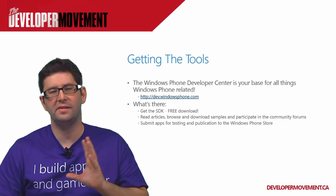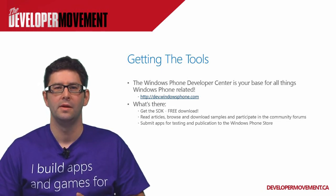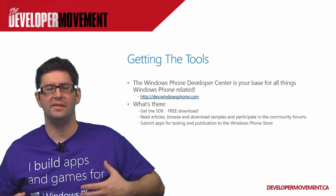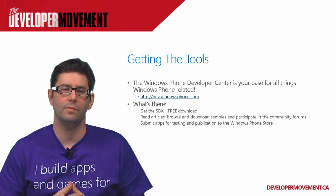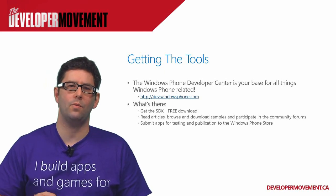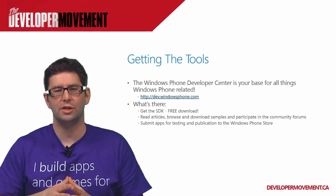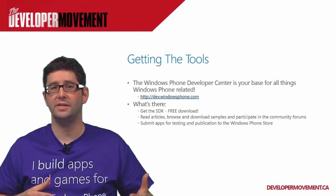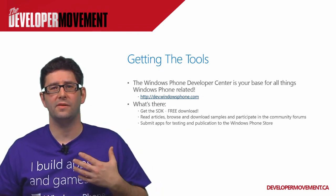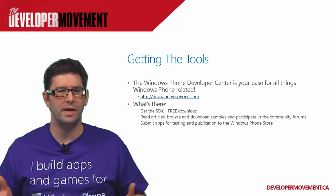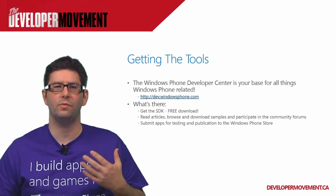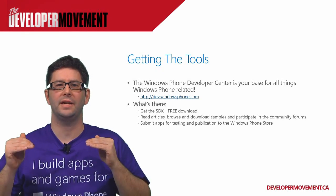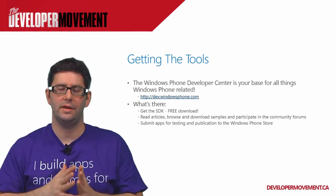You also have the ability to submit applications from the developer center. The model is very similar to the iPhone model and Google Play from a store perspective. Every application or game you get on Windows Phone, with a few exceptions, comes through the Windows Phone Store. The reason is we can control quality and content — both from a content standpoint as well as a technical one. We want to make sure there's no malicious code, and we set a minimum quality bar before we certify your app and allow it in the store.